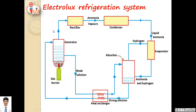Ammonia is used as refrigerant and water as absorbent. Ammonia is quickly converted into vapors and sent to the rectifier. In the rectifier, if water vapor or water droplets are present, they are rectified — only ammonia vapor passes through. The water vapor is collected and sent back to the generator. Only high pressure, high temperature ammonia vapors pass through the condenser where heat energy is rejected, converting ammonia into high pressure low temperature liquid. This liquid is sent to the evaporator where cooling effect is achieved. Hydrogen gas is used along with ammonia in the absorbent so that ammonia is quickly absorbed in the absorber, and this hydrogen gas is recirculated again and again.